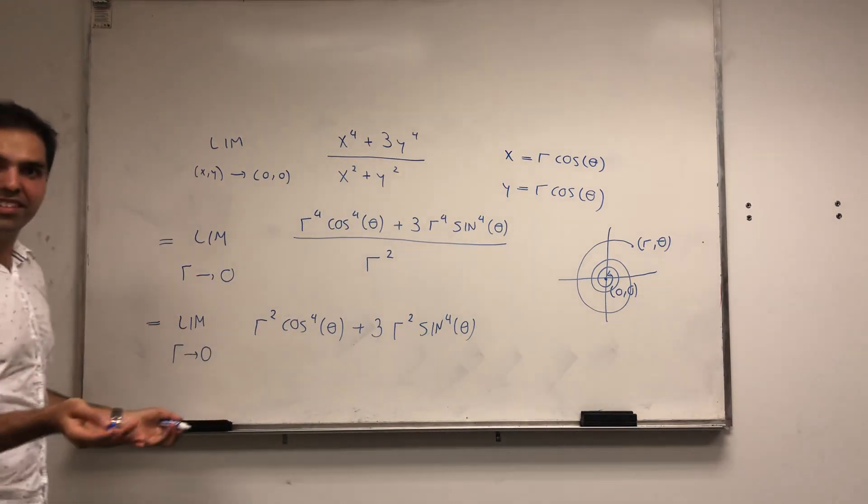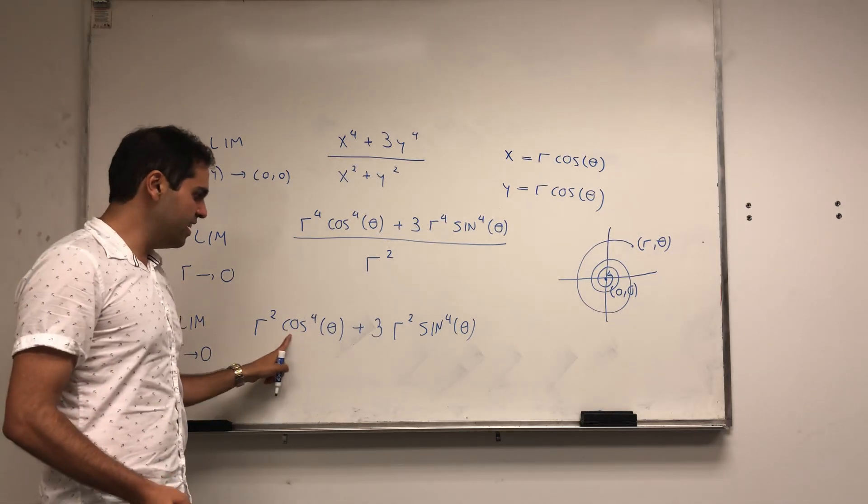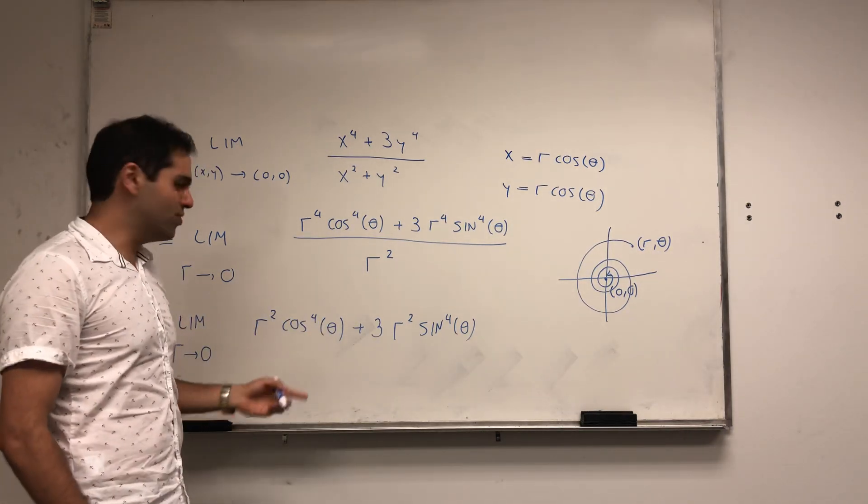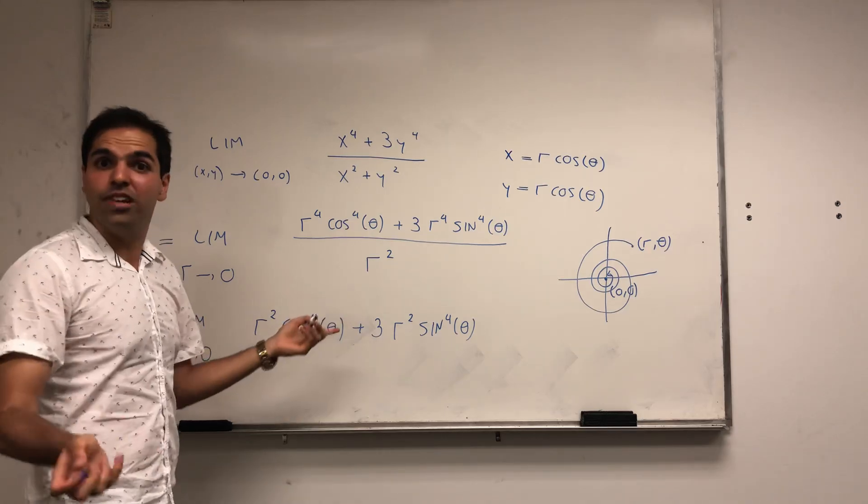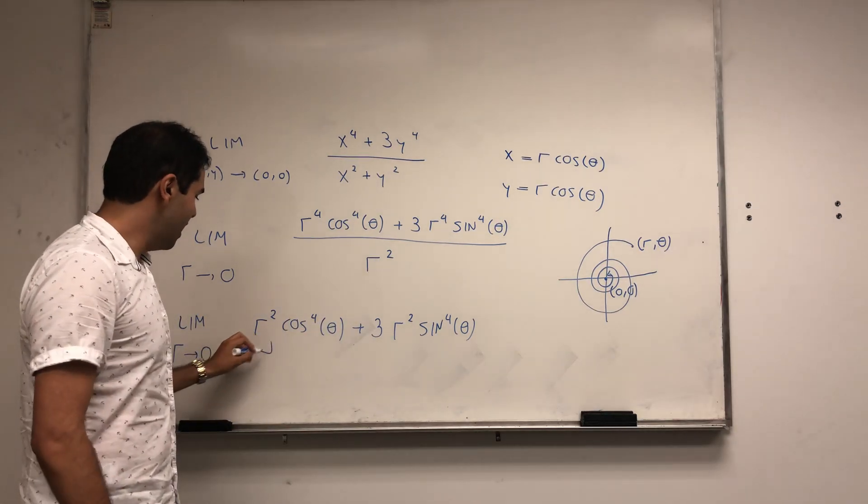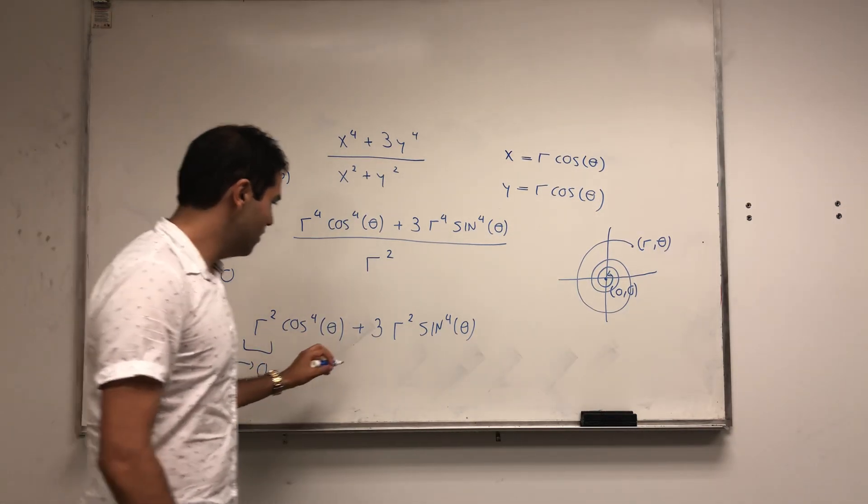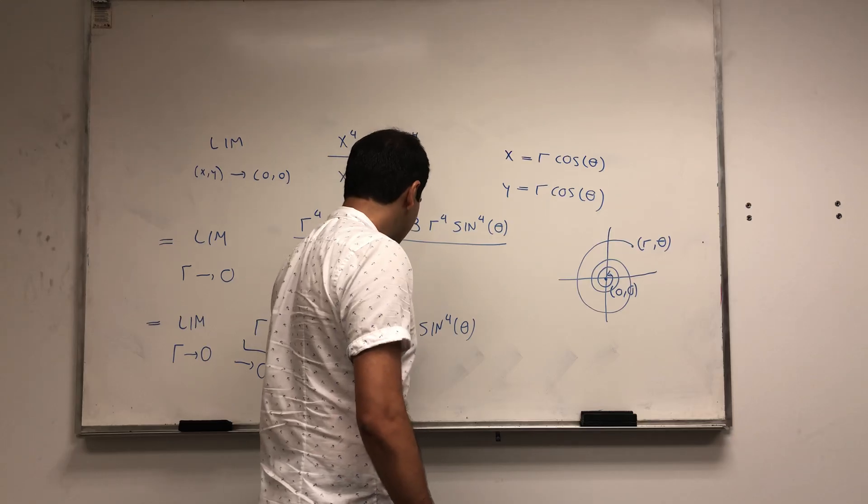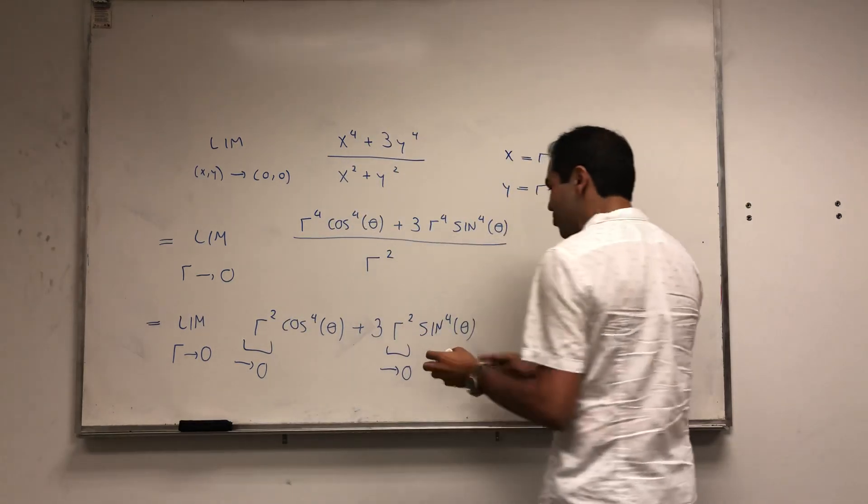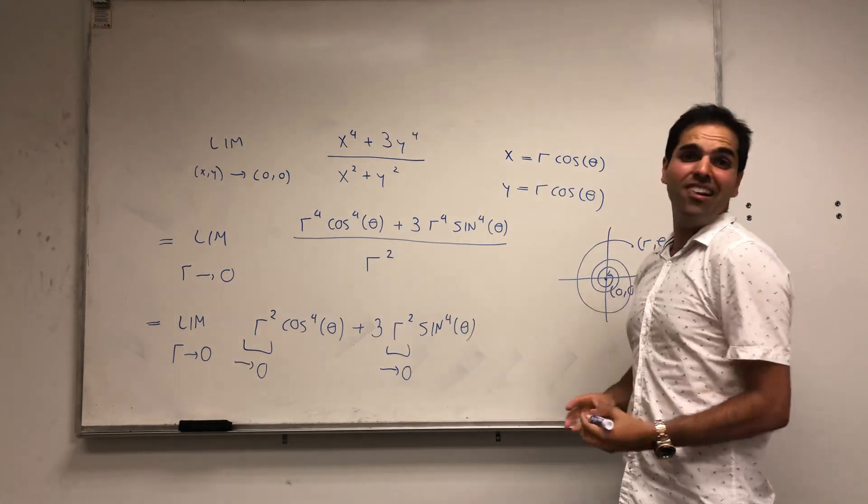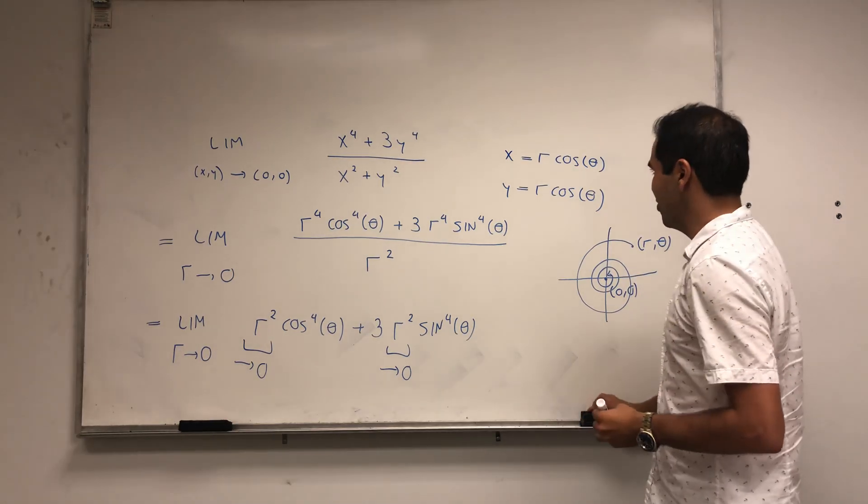And here is the nice thing. This thing, right, it wiggles between plus and minus 1. In fact, it wiggles between 0 and 1, even better. And this goes to 0. And same thing here. This goes to 0, and this wiggles between 0 and 1. So it turns out the whole thing then just goes to 0.